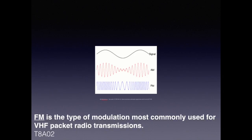As you recall from previous lessons, frequency modulation is less susceptible to interference. This makes it more suitable for data transmission. Less interference equates to lesser need for error correction and leads to faster transmission rates. For the exam, understand that FM is the type of modulation most commonly used for VHF packet radio transmissions.